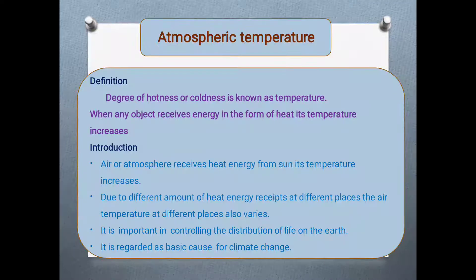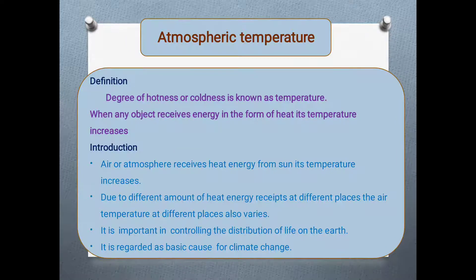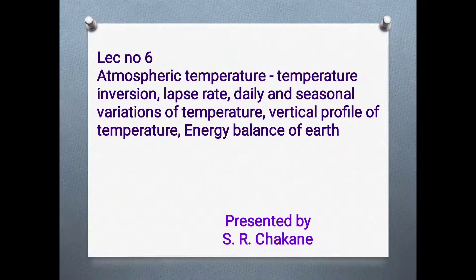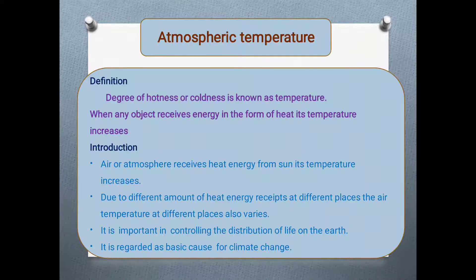In introduction to atmospheric temperature: the air or atmosphere receives heat energy from the sun and its temperature increases. Due to different amounts of heat energy received at different places, the air temperature at different places also varies. This is important in controlling the distribution of life on earth, as every process on the earth's surface is controlled by atmospheric temperature, making it an important cause for climate change.